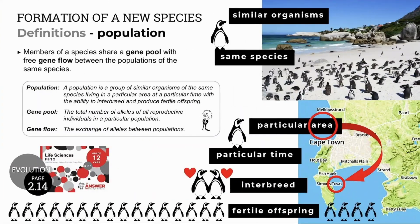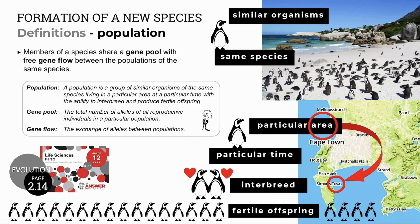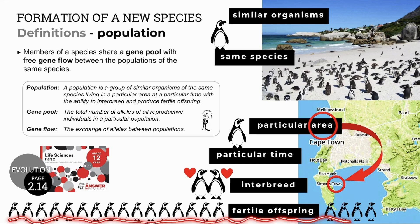Another definition we have to know is a population. A population is a group of similar organisms of the same species living in a particular area, at a particular time, with the ability to interbreed and produce fertile offspring.